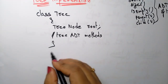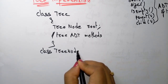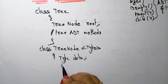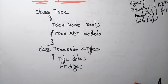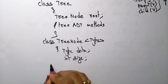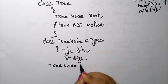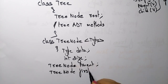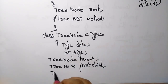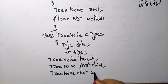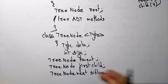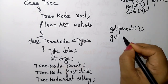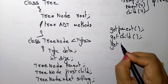Here you can write your abstract data type methods. In the class TreeNode you need to declare the data type, int size for the size of the tree, tree node parent, tree node first child, and tree node next sibling. These are all the abstract data type declarations. And we are calling get parent, get child, and get next sibling.